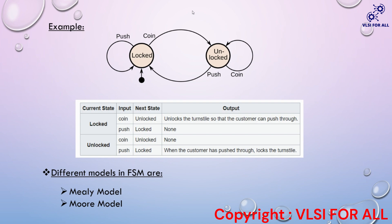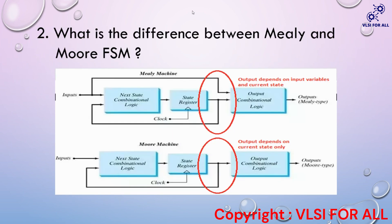This is one example of an FSM. In FSM we mainly consider two models: the Mealy model and the Moore model. The second question is: what is the difference between Mealy and Moore FSM? We observe the difference between the two models in the diagram. The key difference is that the Mealy model depends on the input variable as well as the current state, whereas the Moore model depends only on the current state.